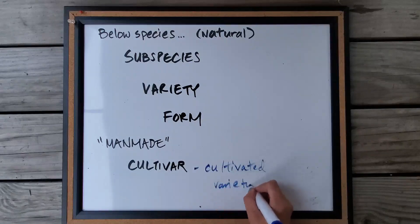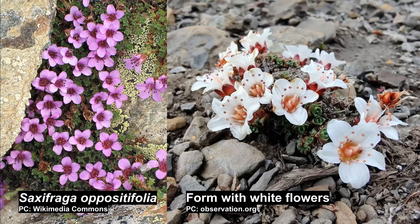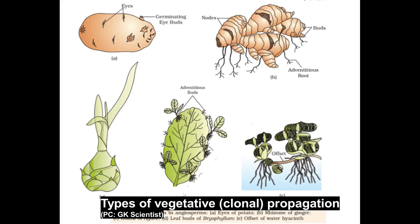A cultivar must be isolated so you can guarantee a specific characteristic. For example, if you find a form with white flowers and you're able to cultivate it so that every single plant from that original plant has white flowers, you can develop a cultivar. However, this has to be micromanaged. Cultivars are normally propagated vegetatively and not sexually — you'll have to take cuttings or divide roots to duplicate the exact plant, so they tend to be clones.